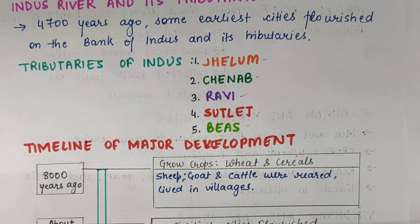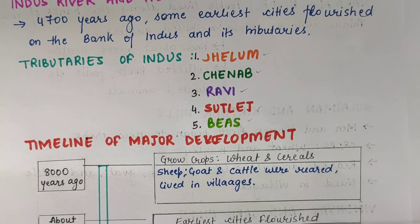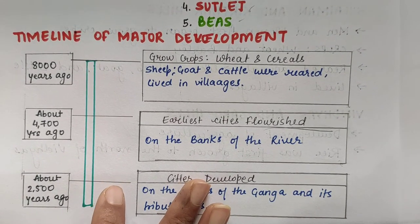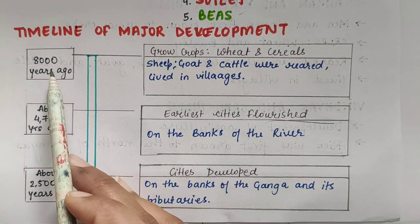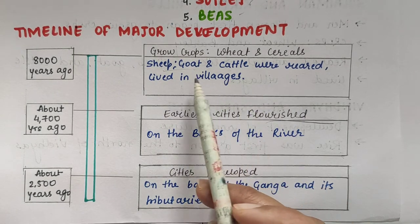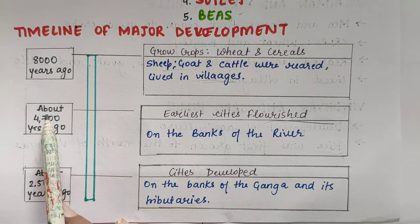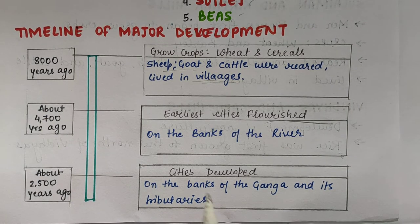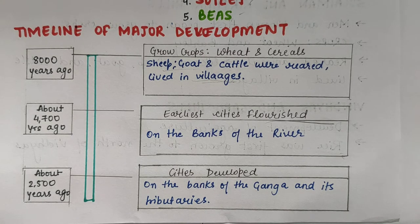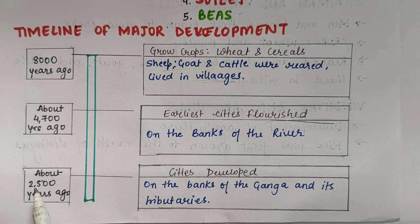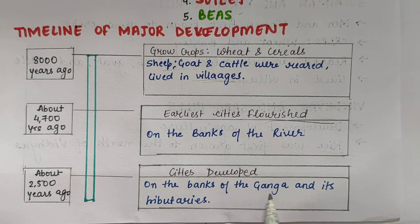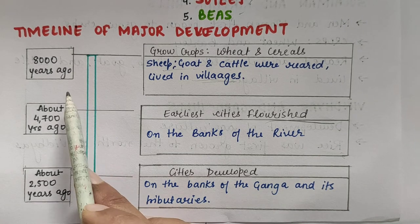Now, timeline of major developments. Timeline is what happened, when it happened. About 8,000 years ago, people started growing crops — wheat and cereals — and were rearing sheep, goat, cattle, and living in villages. About 4,700 years ago, the earliest cities flourished on the bank of the Indus River and its tributaries. About 2,500 years ago, cities developed on the bank of the Ganga and its tributaries.